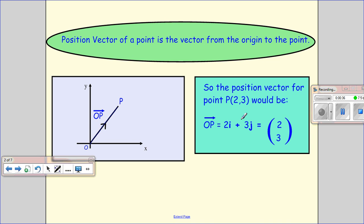So if we want to find the position vector of point P(2,3), so it has an x-coordinate of 2 and a y-coordinate of 3, what we're looking to do is find the vector which is going to go along two units parallel to the x-axis and up three units parallel to the y-axis. So remember that i takes you in the direction of the x-axis by one unit and j takes you in the direction of the y-axis by one unit.